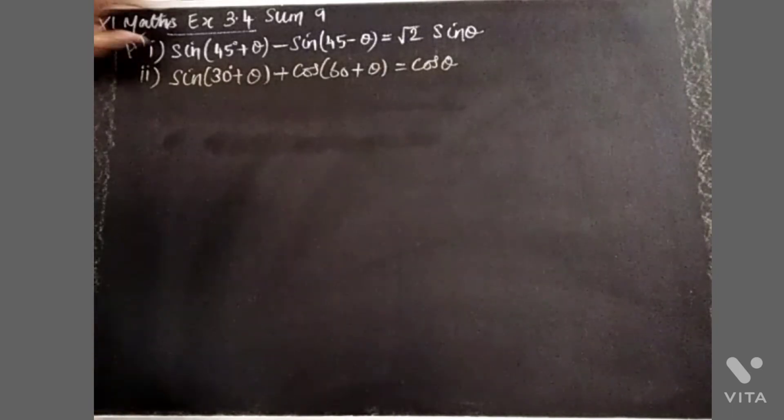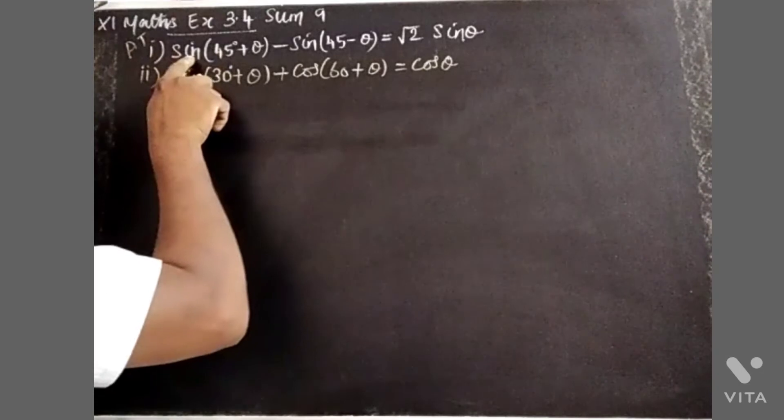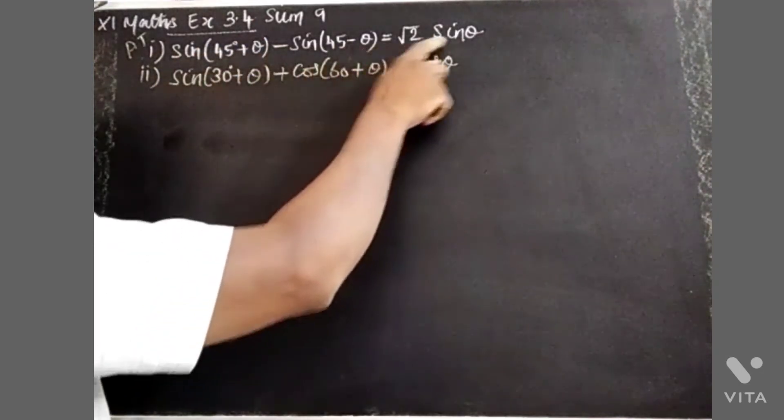This is Exercise 3.4, Sum No. 9. We need to prove that sin(45+θ) - sin(45-θ) = √2 sin θ.